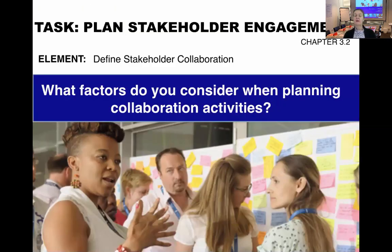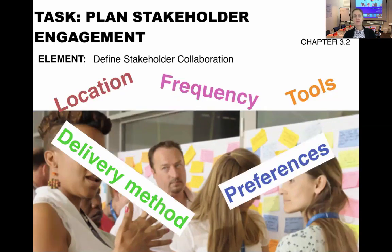Looking at the element around defining stakeholder collaboration — it's all about what factors you consider when planning collaboration activities. When you define stakeholder collaboration, you need to think about things like frequency: how often will you collaborate with stakeholders? What tools will you use? What preferences might your stakeholders have in terms of how you collaborate with them? How do you deliver information — will it be workshop format, emails, or a combination? And what locations do you need to consider — will you be physically meeting in one place or will it all be virtual meetings?